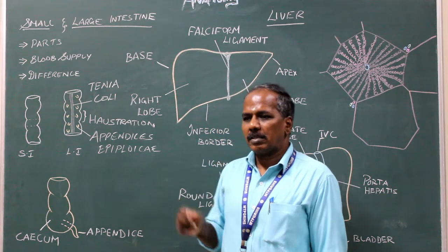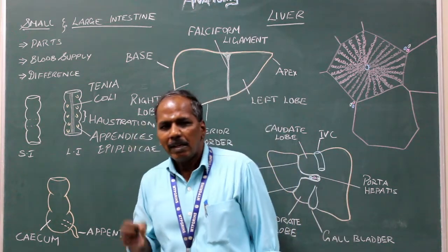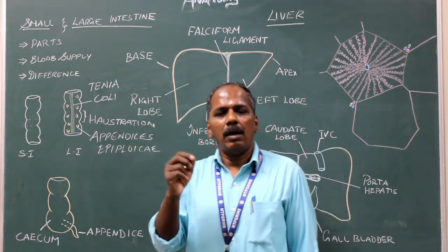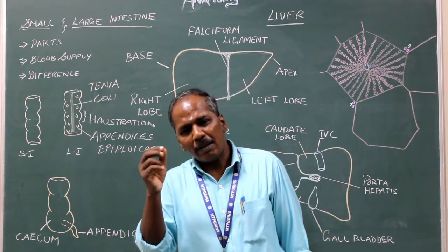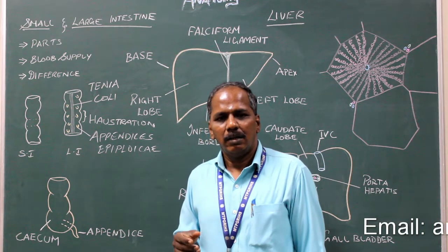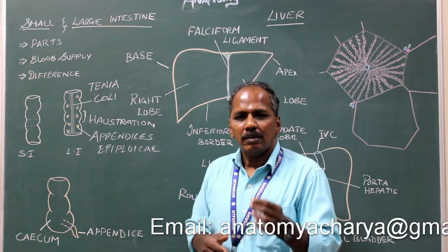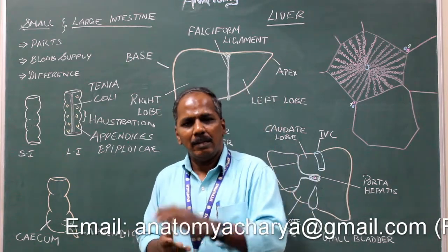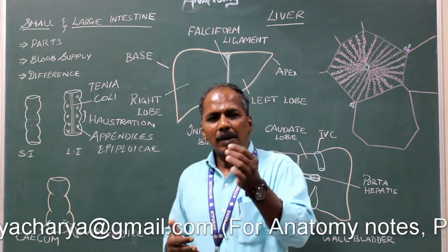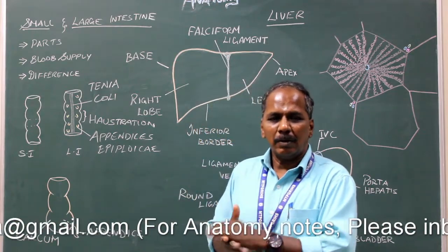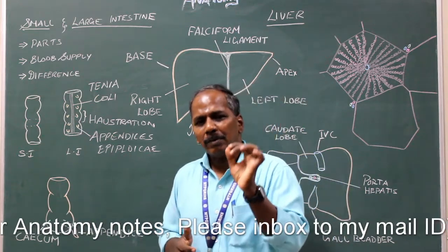Small and large intestine. The small intestine is 6 meters long. It is attached to the posterior abdominal wall by a fold of peritoneum known as mesentery. So it is suspended from the posterior abdominal wall by this fold of peritoneum — the mesentery — which is nothing but a fold of peritoneum.